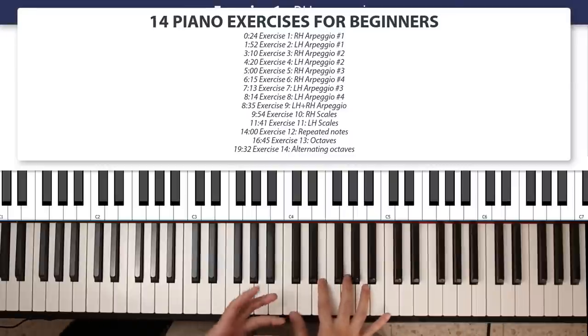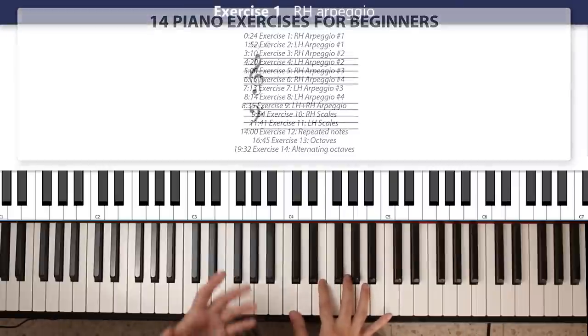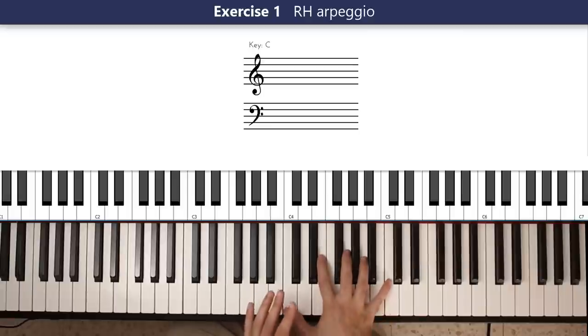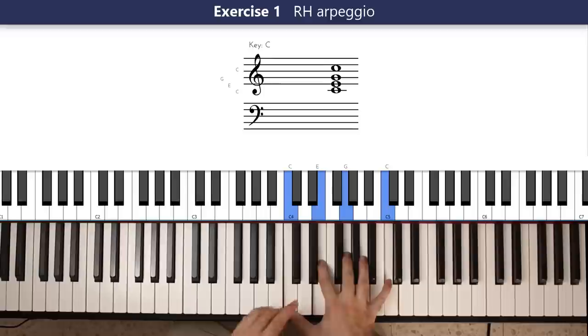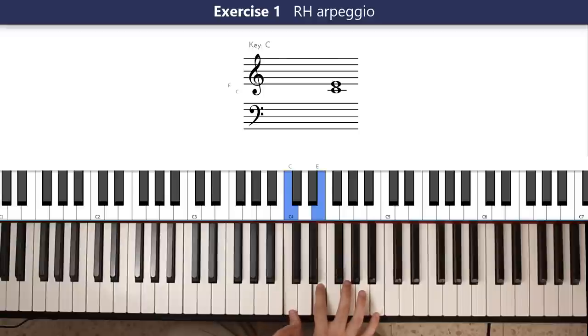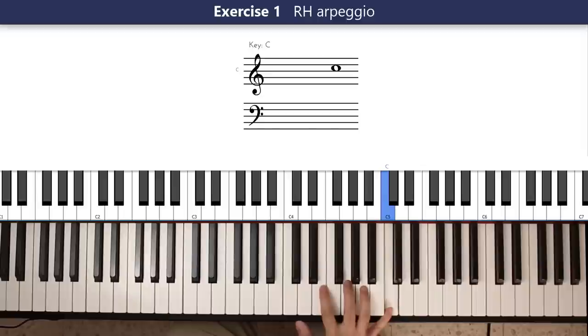Okay, so we're going to start with a simple arpeggiation. Take your right hand and put your fingers on a C major chord. Basically, you're playing your thumb, which is your first finger on C, second finger on E, third finger on G, and fifth finger on C.